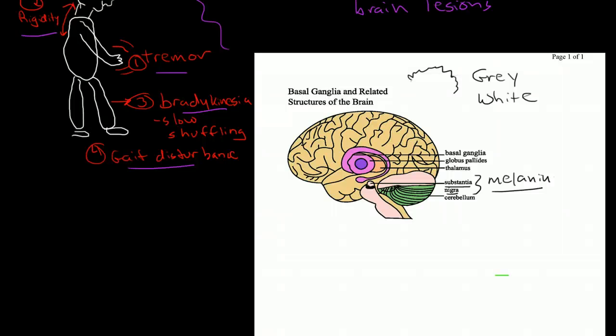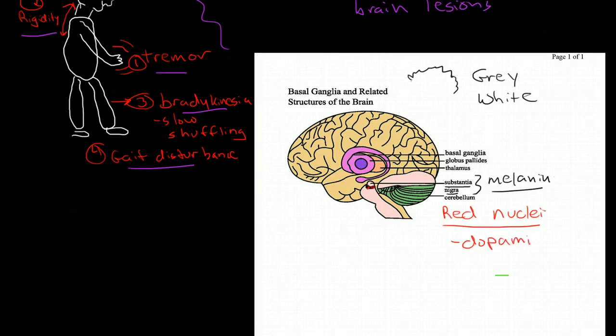The substantia nigra has two little areas within it that are called the red nuclei, and these little tiny red nuclei are responsible for producing dopamine. They produce dopamine actually for only one major important part of the brain, which is the basal ganglia, so it sends its dopamine supplies up here.